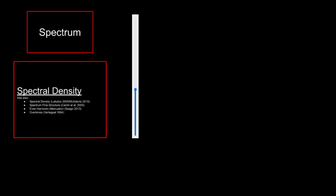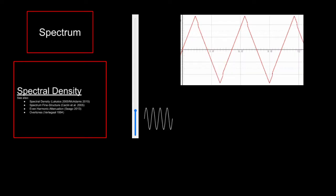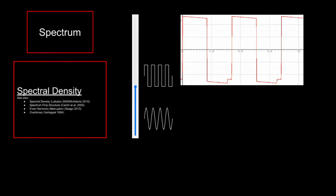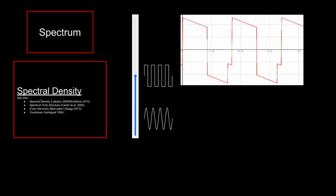In past timbre space studies, this dimension correlated to a term called spectral density. But functionally, the spectrum parameter controls the base wave shape, starting off as a sine shape wave, then to a square shape wave, and finally a sawtooth shape at the end.